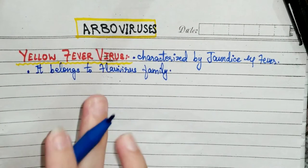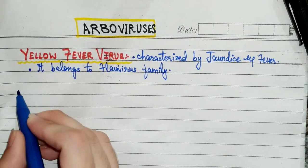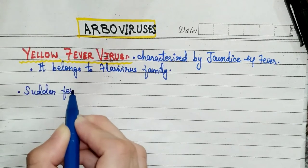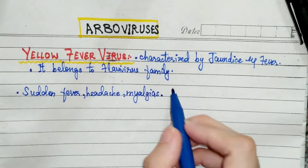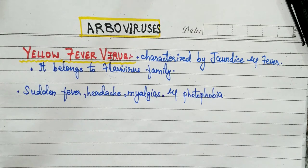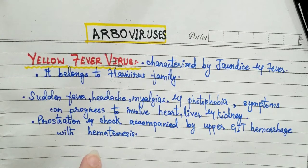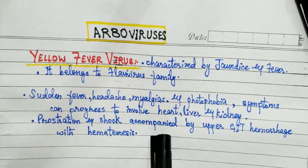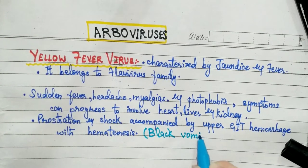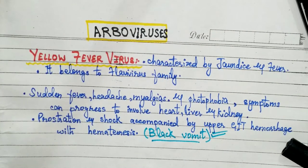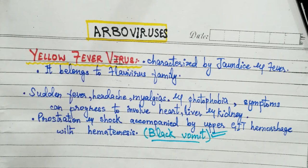This virus causes a severe level of illness that can be life-threatening. Clinical findings include sudden fever, headache, myalgia (muscle pain), and photophobia. Symptoms can progress to involve the liver, heart, and kidney. Prostration — meaning extreme weakness — and shock can occur, accompanied by upper GIT hemorrhage with hematemesis, producing black vomit. This is a very characteristic and important finding for MCQs: black vomit indicates yellow fever virus.